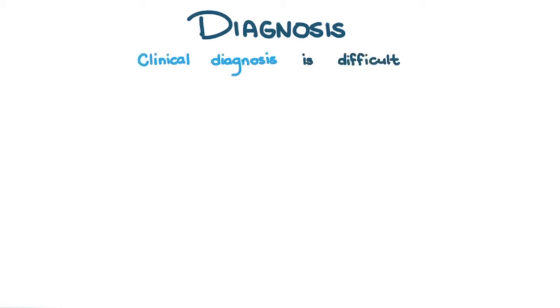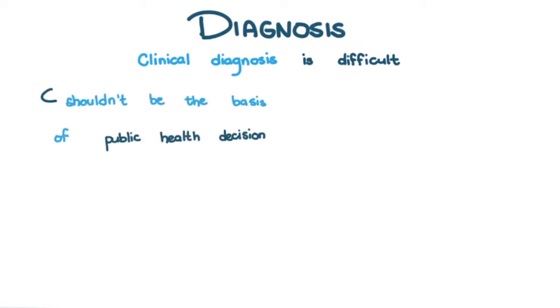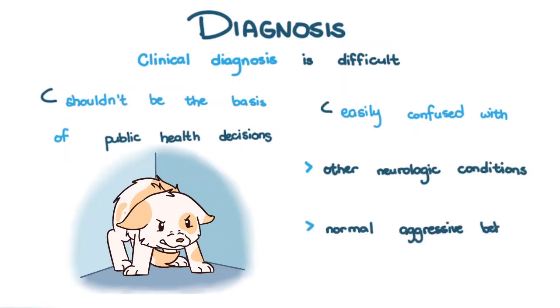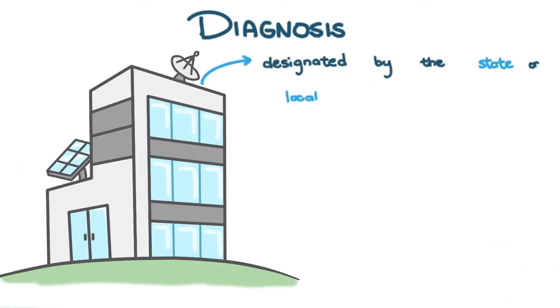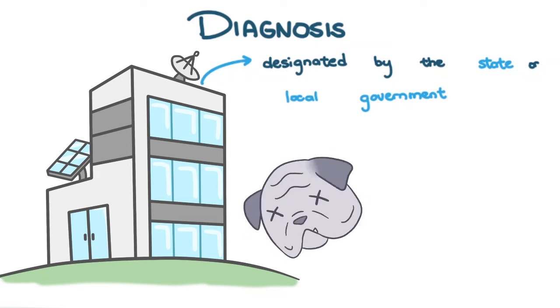Because of the vastly different ways rabies can manifest, clinical diagnosis is difficult and shouldn't be the basis for public health decisions. It can be easily confused with other neurologic disorders or normal aggressive behavior in a strange environment. Suspected rabies cases should be sent to approved laboratories designated by the state or local government for a definitive diagnosis. The suspect patient must unfortunately be euthanized and the head removed for submission. The specimen must be fresh, frozen, and unfixed — no chemical fixation should be done as this may affect testing.